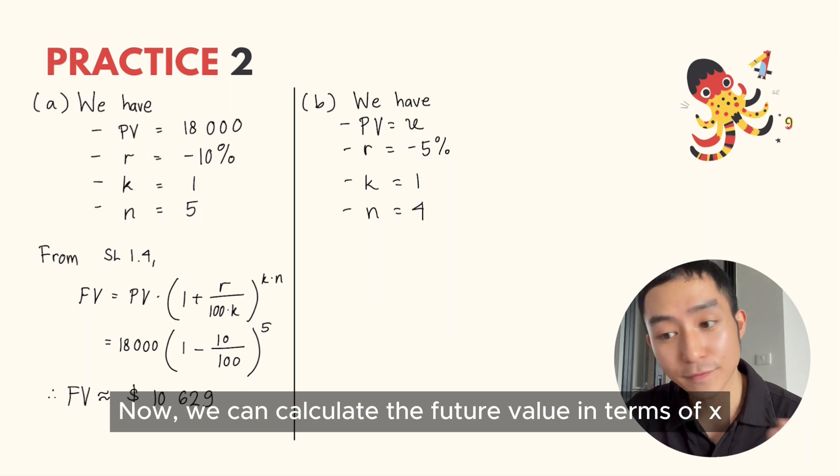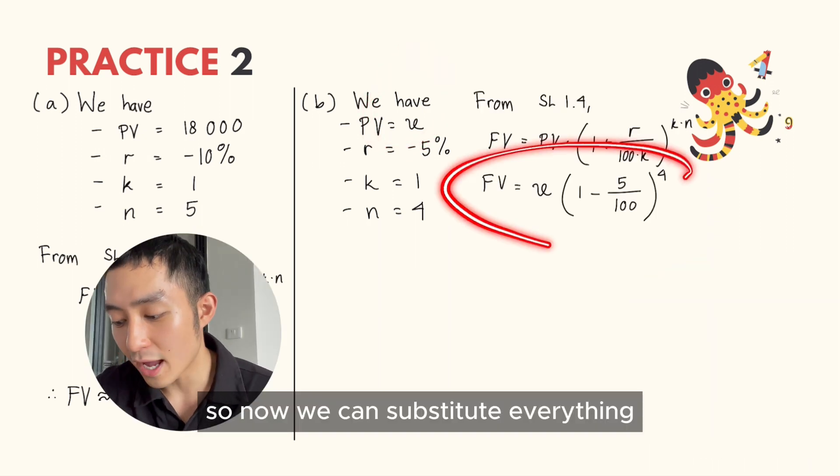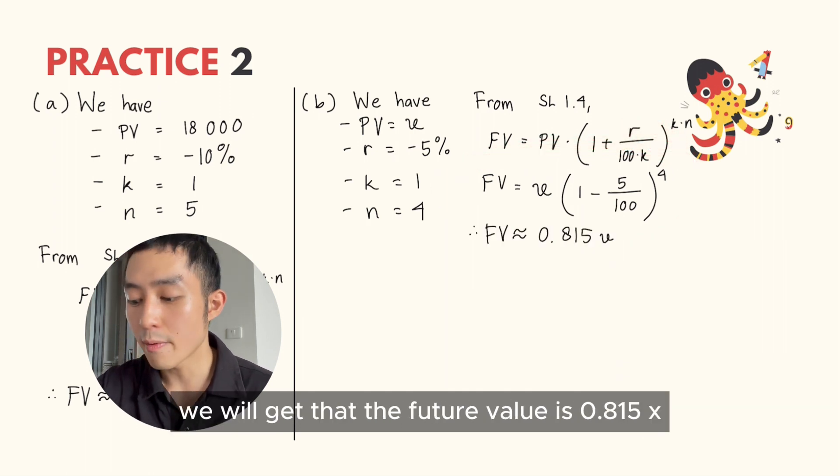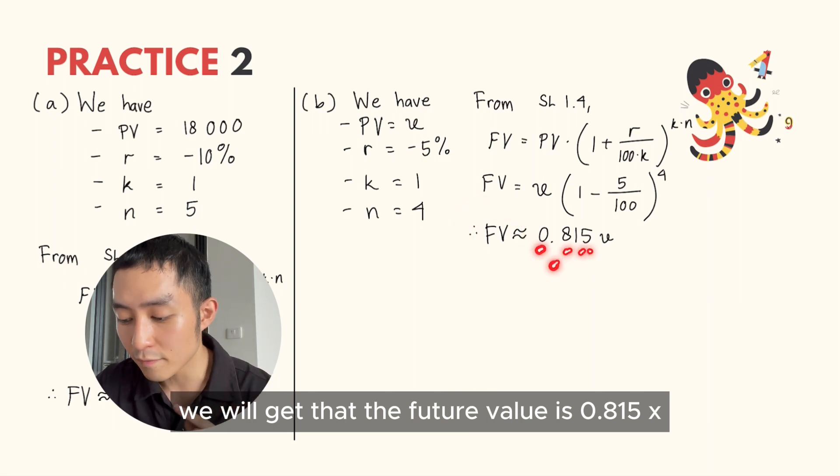Now we can calculate the future value in terms of x. We substitute everything what we have with present value of x, and then solve it with GDC. We will get that the future value is 0.815x.